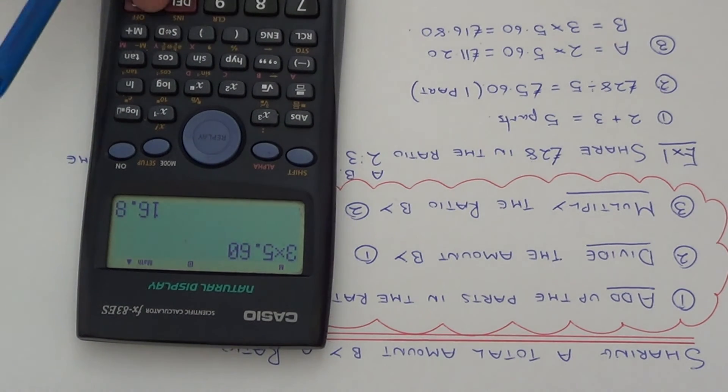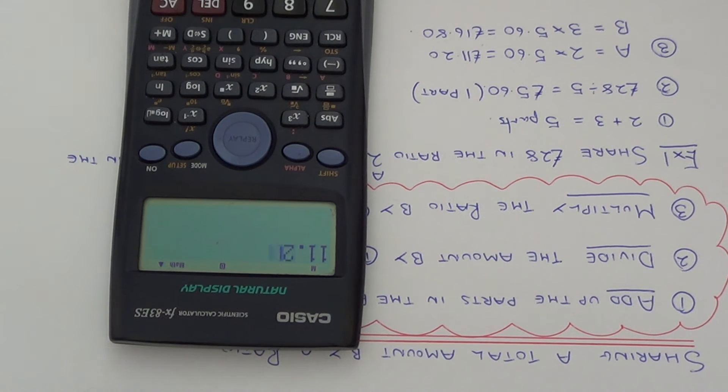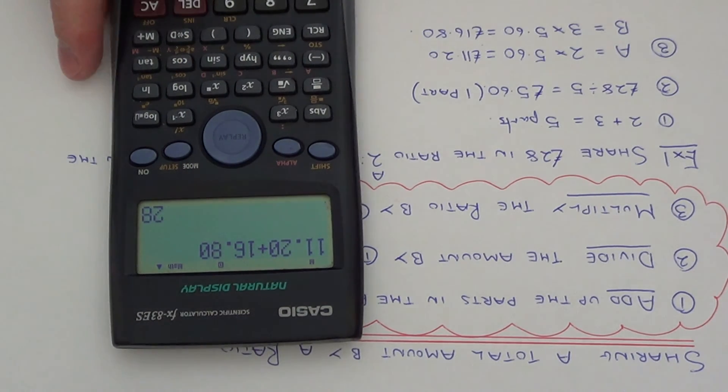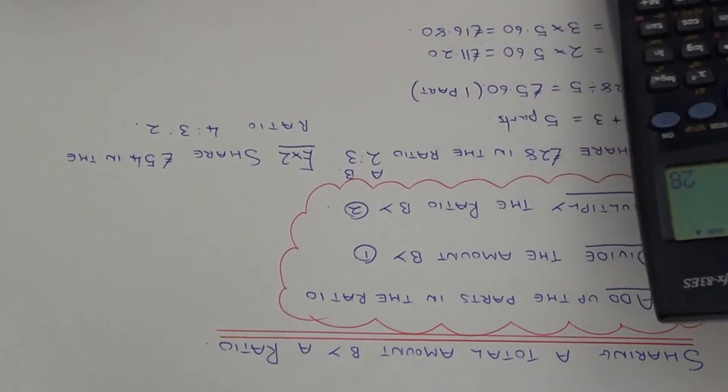You can just check that these add up to our total amount £28. So they are £11.20 plus £16.80. There you go. So they both add up to £28. So let's move on to example two.